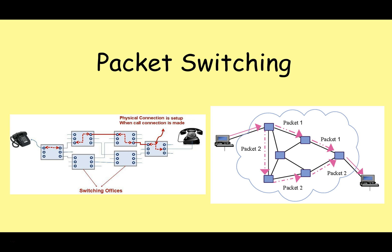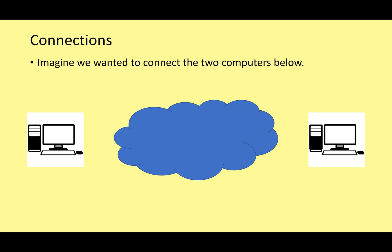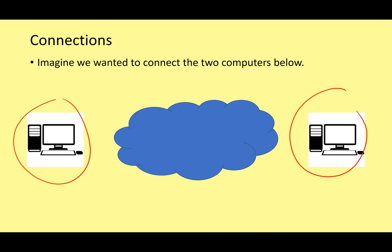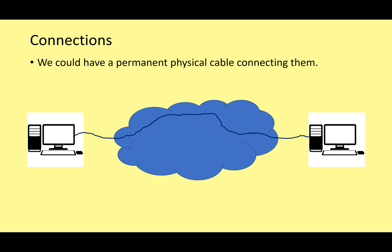Hello and welcome to a video on packet switching. Let's imagine we wanted to connect two computers. We've got one computer over here, another over here, and in the middle we've got some kind of network — a cloud — between one computer and the next. We could just have a permanent physical cable connecting them, allowing them to send and receive information. This would work well if you've got two computers in a room together, or a small local area network.